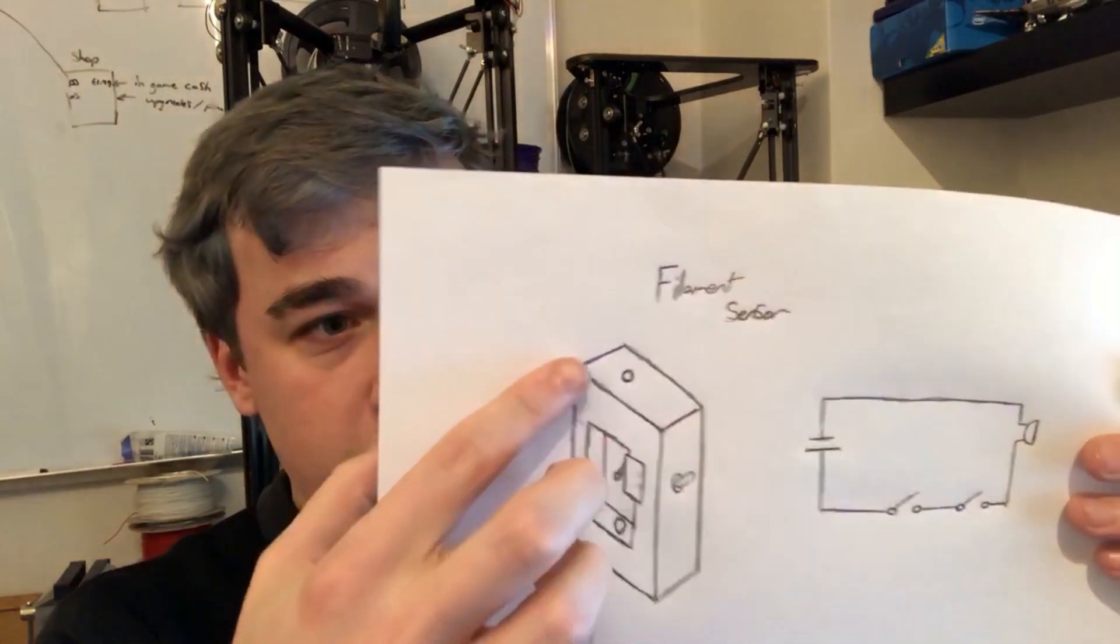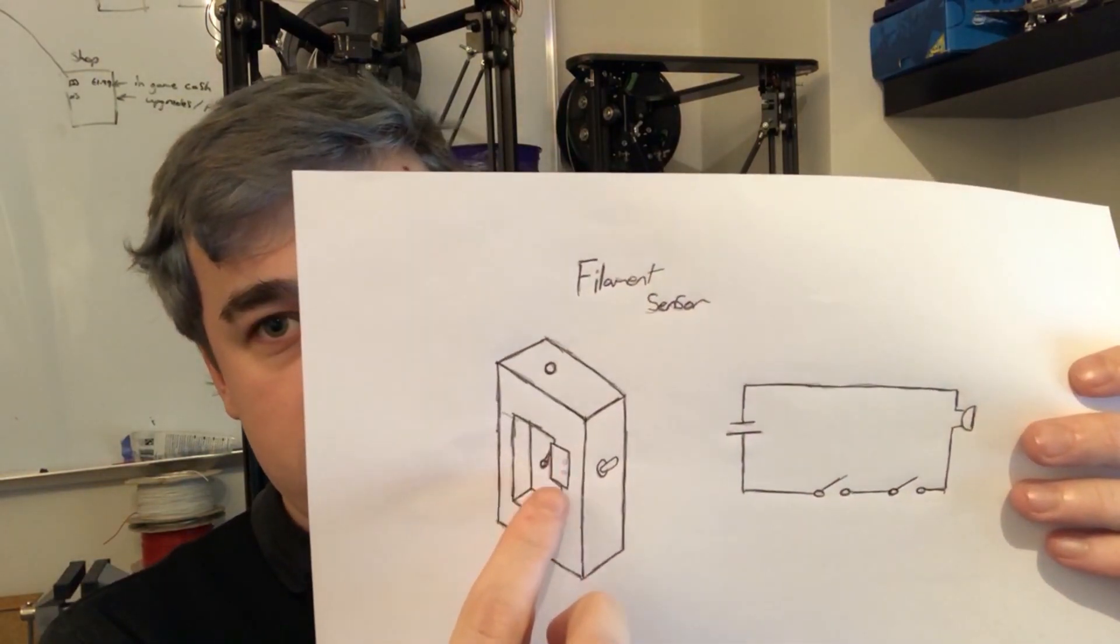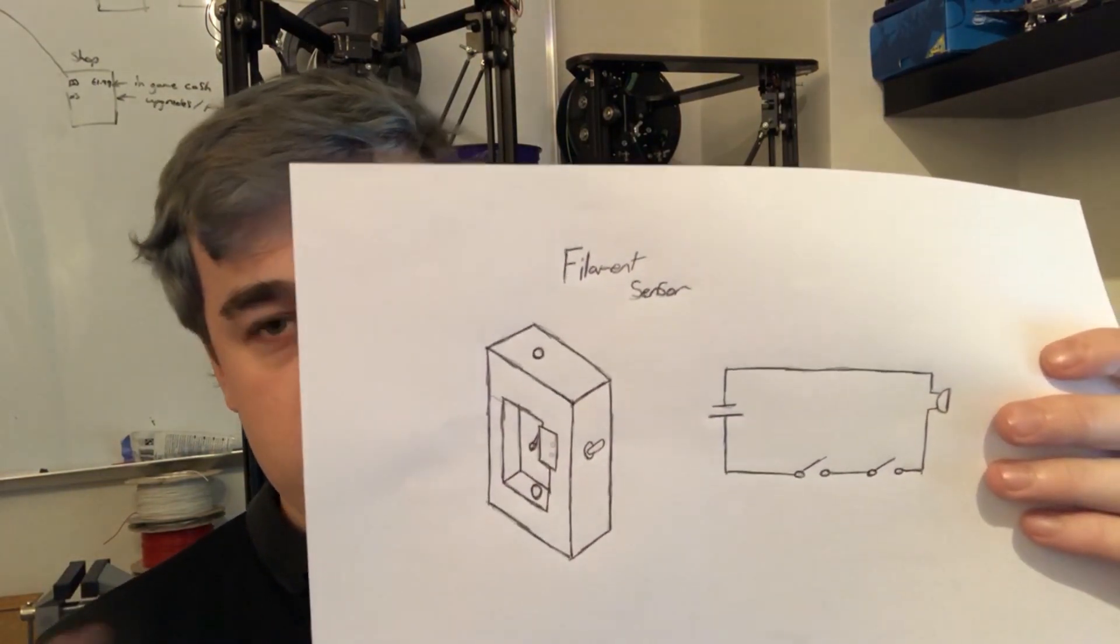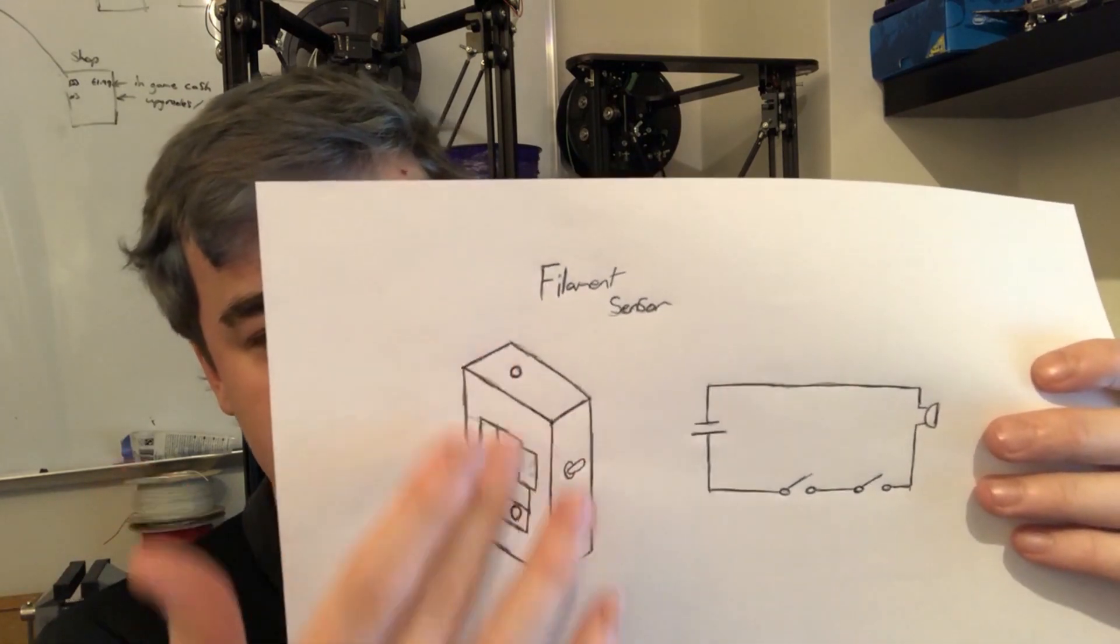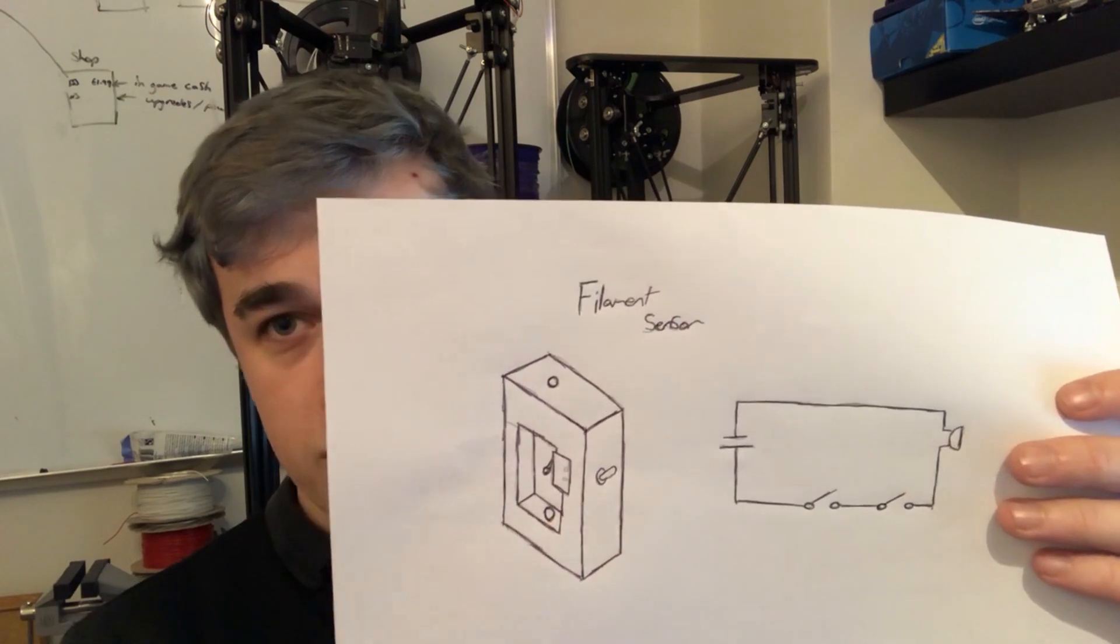So I've made a simple design, basically we've got the filament which will go through this tube here, we've got a simple switch on it, when it's closed against the pressure of the filament it's off, as soon as that opens we know that the filament's gone.